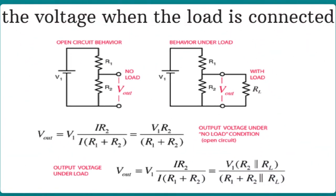Now we are going to calculate the output voltage when a load is connected. This means we are looking at the behavior of the circuit under a load. We have the same circuit with R1 and R2, but we are going to connect to V_out an R_L — the resistance of a load. This means R2 and R_L will be connected in parallel, so the voltage will be changed.